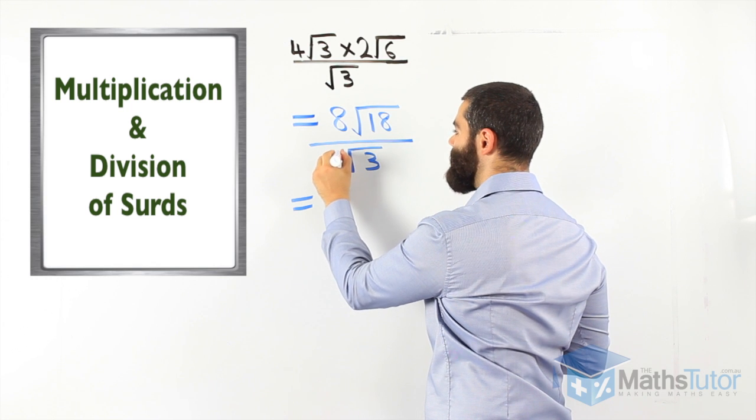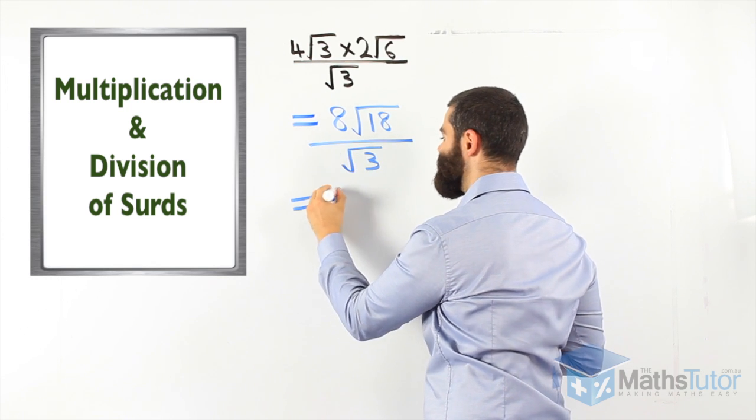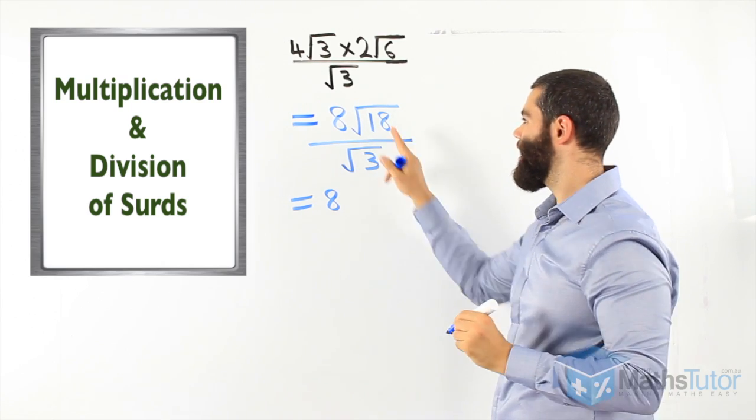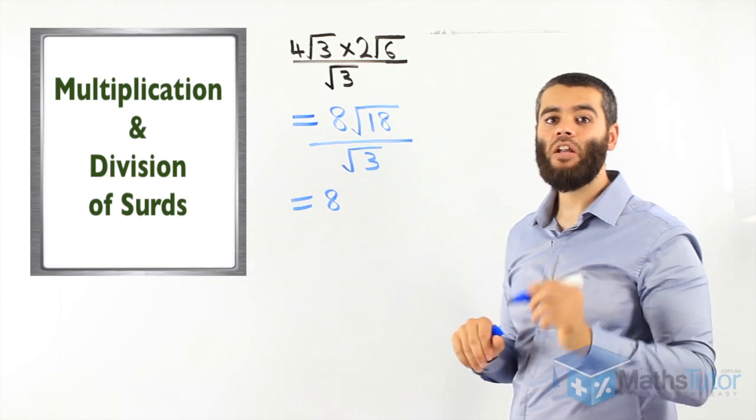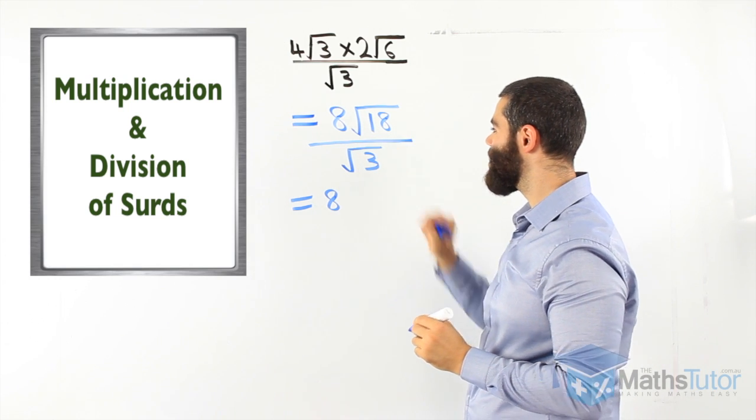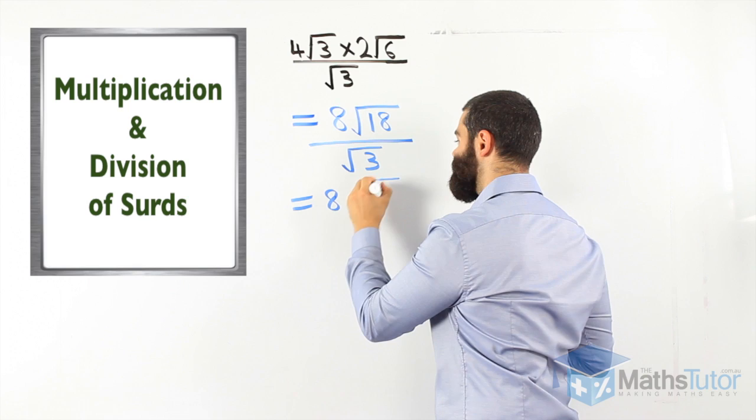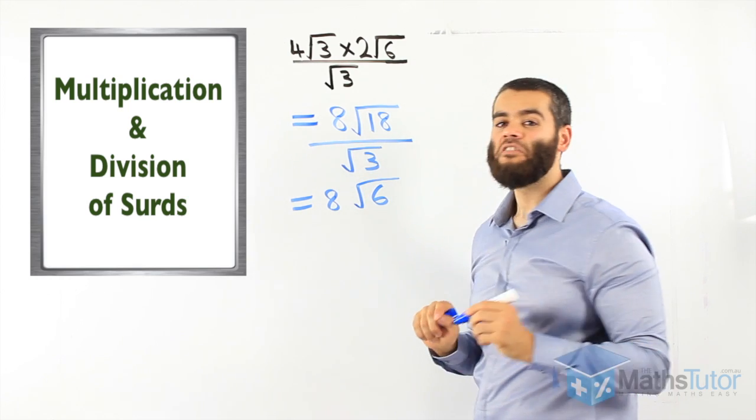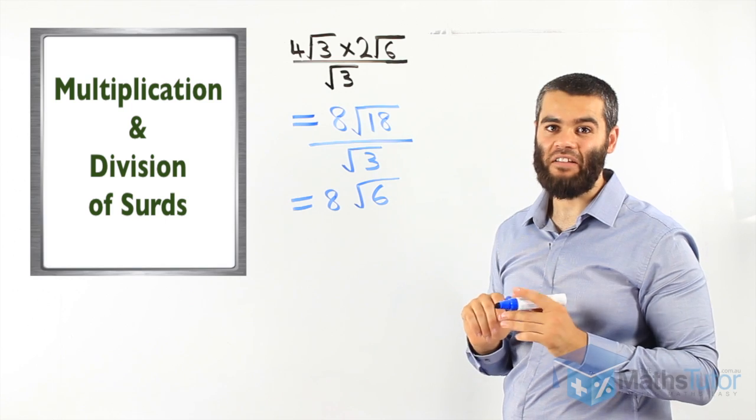8 divided by, there's an invisible 1, 8 divided by 1 is just 8. And now the surds. Root 18 divided by root 3. 18 divided by 3 is 6. So 8 root 6 is our final answer.